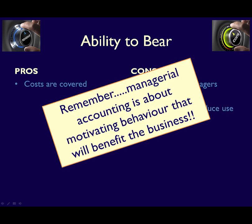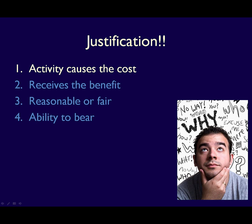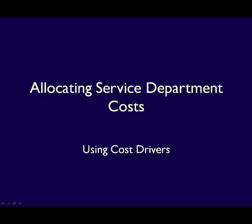This is likely the worst method used to allocate service department costs, although that doesn't mean companies don't use it. Thinking about justification number one — an activity of the operating department causes the cost to happen and can be tracked — we use cost drivers to represent the use of resources by the operating department.